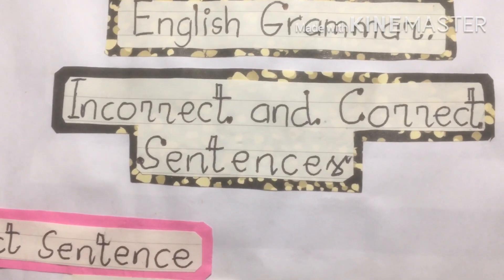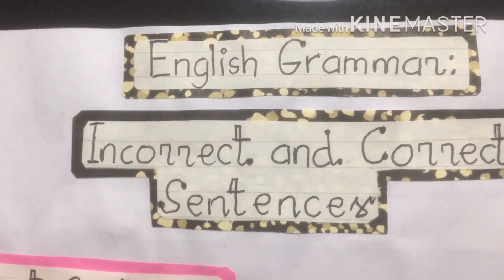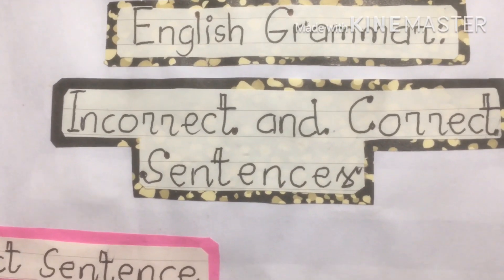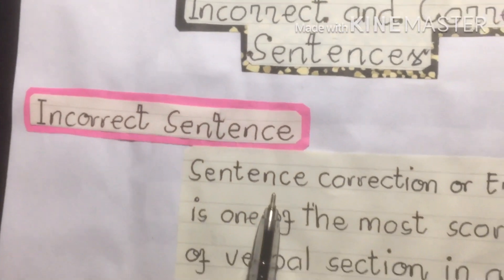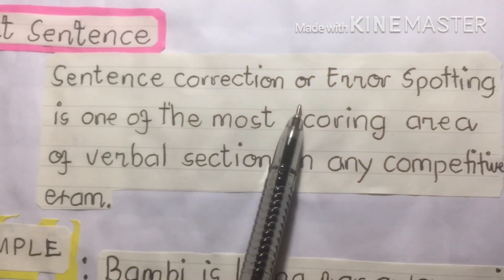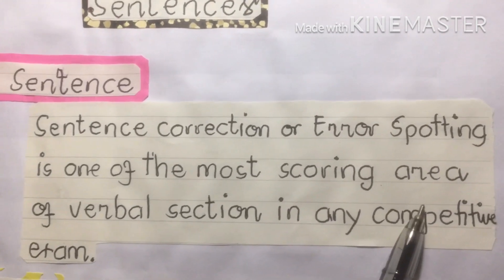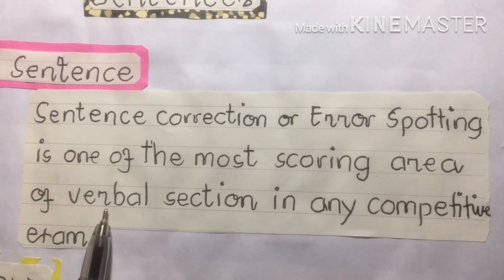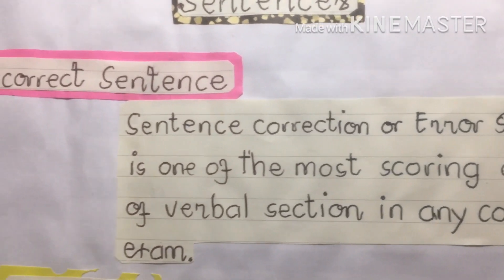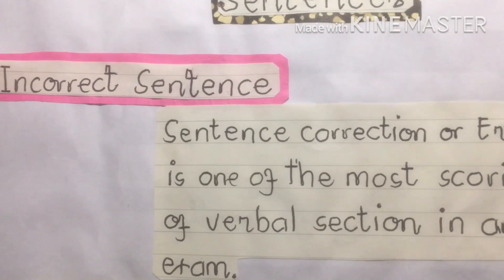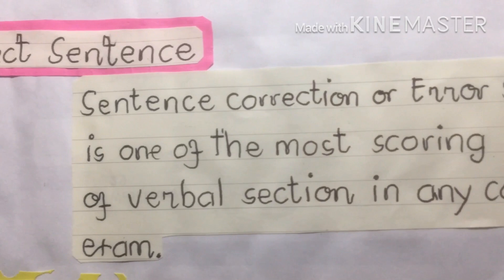That's why these are the most common logical reasons why incorrect and correct sentences arise. Talking about incorrect sentences — remember, it is a sentence correction or error spotting. It is one of the most scoring areas of the verbal section in any competitive exam. You must read thoroughly the sentences and identify which sentence is correct and which is incorrect.